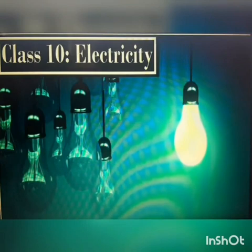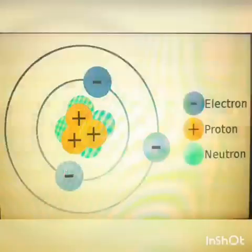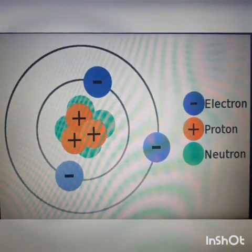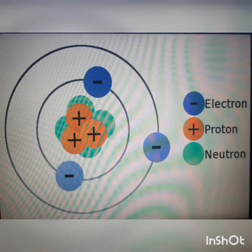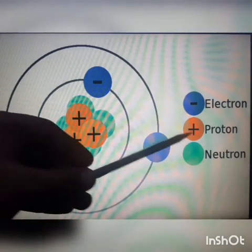Before learning about electricity in detail, we need to know a little bit about chemistry also. Here, you can see the diagram of an atom and the constituents of an atom — that means what are the things that are present inside an atom. The things that are marked plus here are protons.